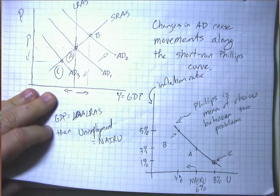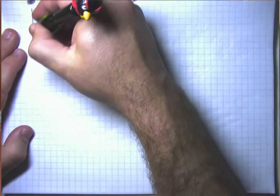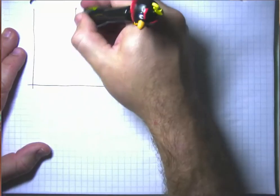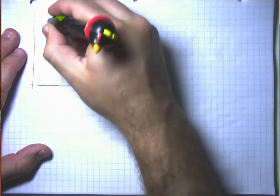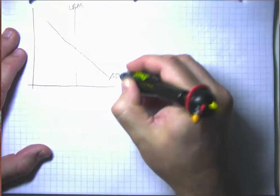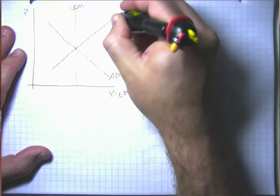But it's worth going and thinking through how this might all play out. So remember that in our aggregate demand, aggregate supply model where we have prices, we have GDP, and we have a short run aggregate supply curve.